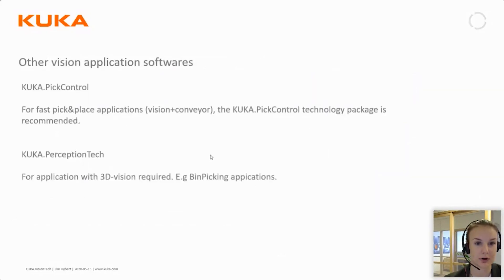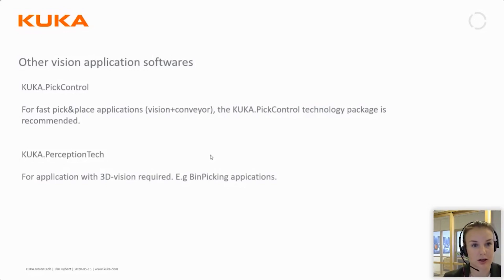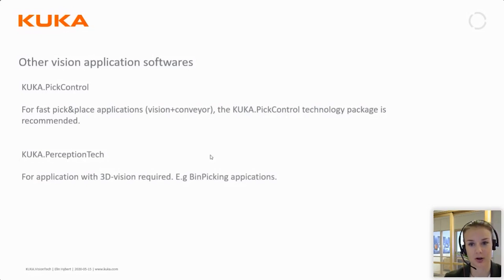As mentioned, there are possibilities to use vision on a moving conveyor. That is the option package KUKA Pick Control, which is suitable for fast picking and placing applications where you have both a vision system and a conveyor. We recommend using this package for that scenario, and if it's of any interest we can arrange a webinar in a few weeks — please comment if you think that would be interesting.